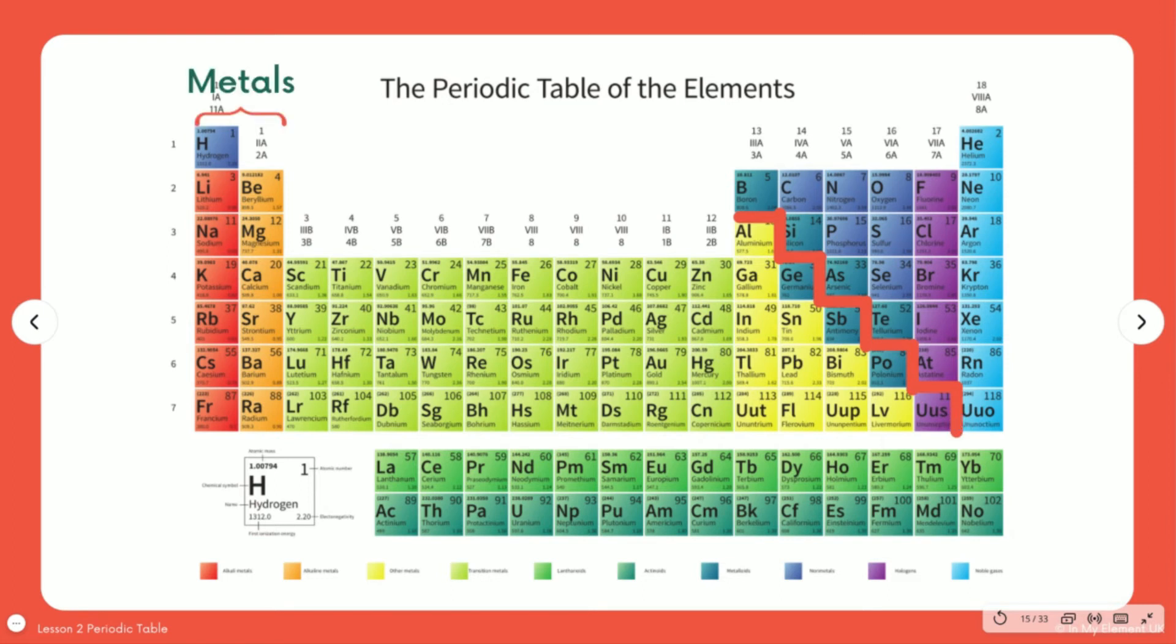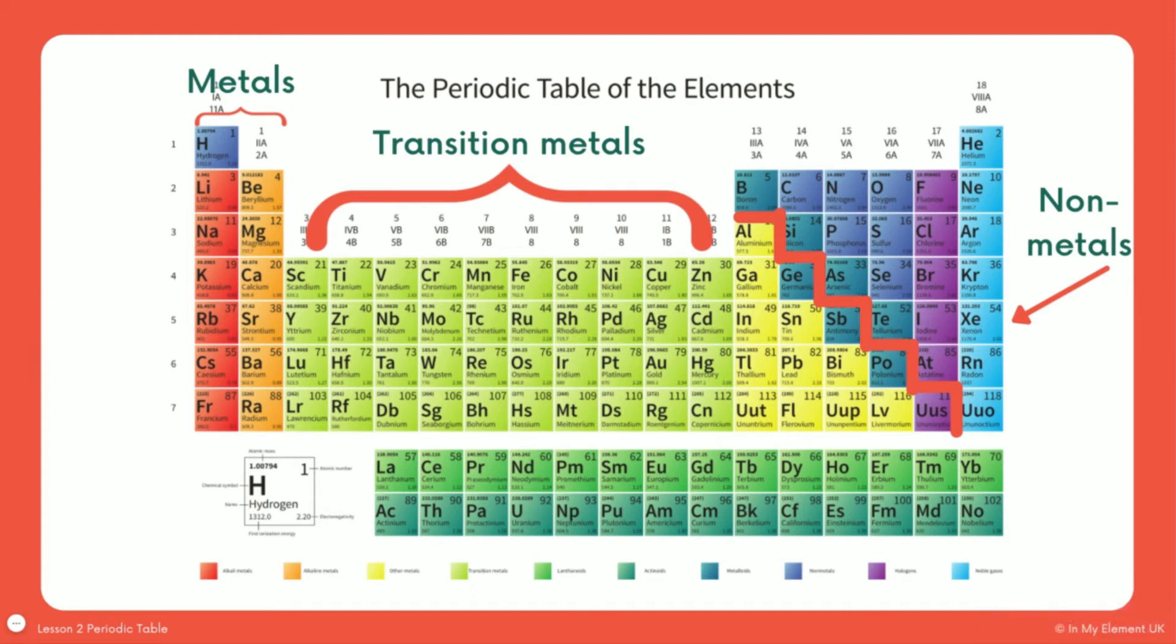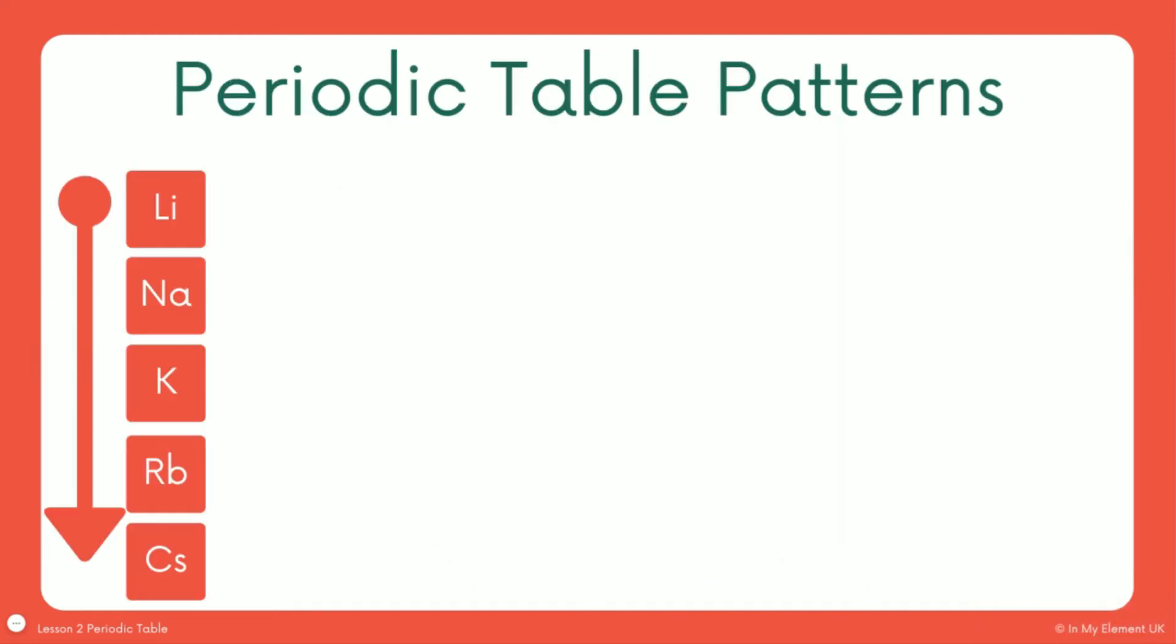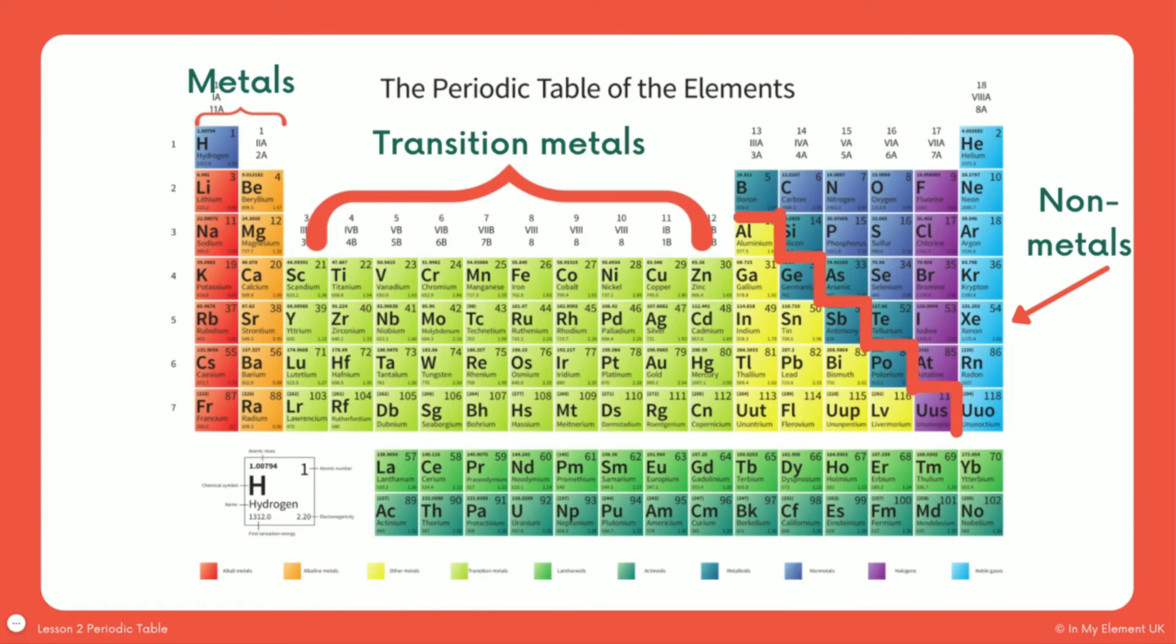Group one and group two are the metals. Already mentioned that group one is also known as the alkali metals. Group two are also metals. This block in the middle here is called the transition metals. And we've got the block at the end that is known as the non-metals. And then we'll just highlight that we know that any row is known as a period. But obviously, a column is known as a group.